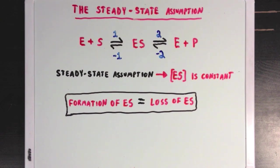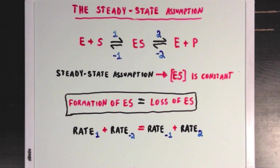If we look at that in terms of our rates, we can say that the rate of formation of ES would be the sum of rate one and rate minus two, since both of these reactions lead to ES. And the rate of loss of ES is equal to the sum of rates minus one and two, since both of these lead away from ES.